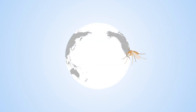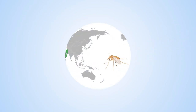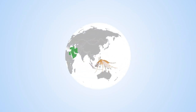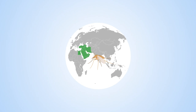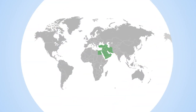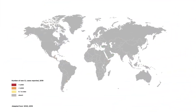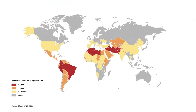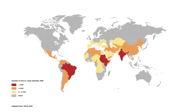Leishmaniasis is a neglected disease caused by a microscopic parasite that spreads by the bite of blood-feeding sand flies. Present in 98 countries, leishmaniasis affects the poorest communities and people in conflict zones with poor medication.